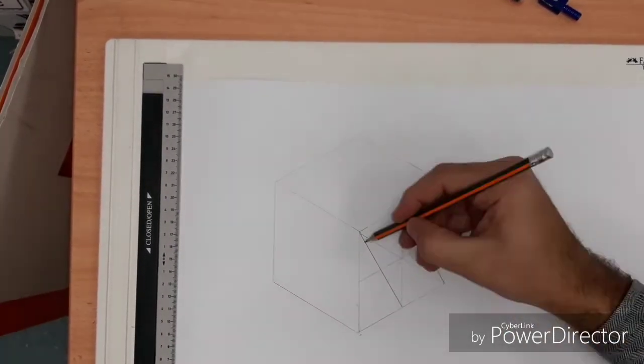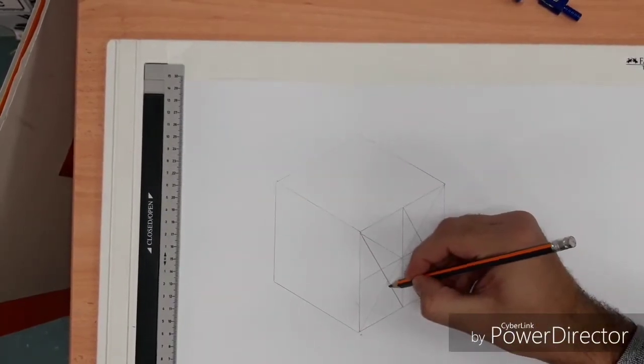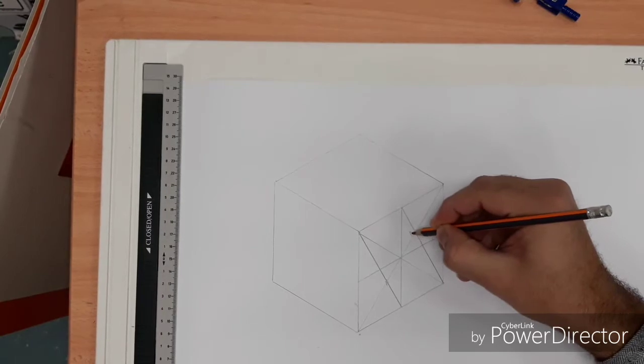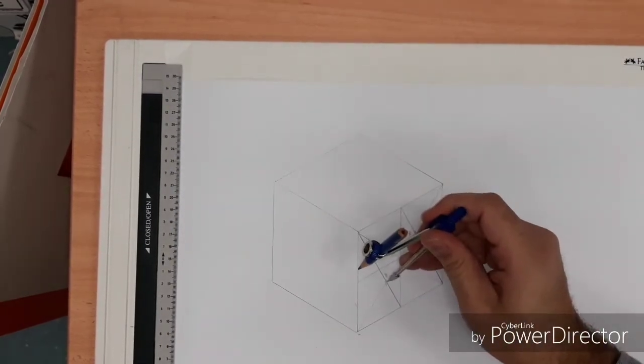Then what we're looking for is where those last two lines we've drawn intersect with the longest line going through our square, and we're going to mark points A and B. Now these points are very important because they're going to be the points where you position your compass point.